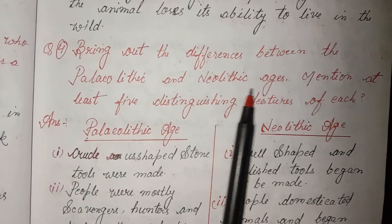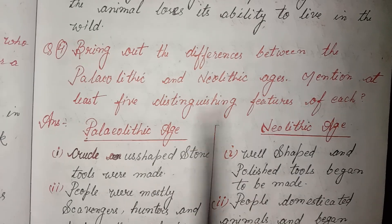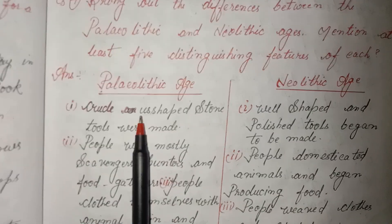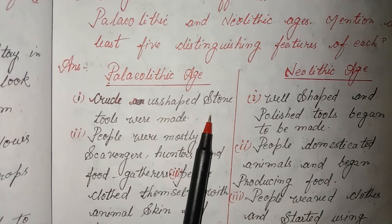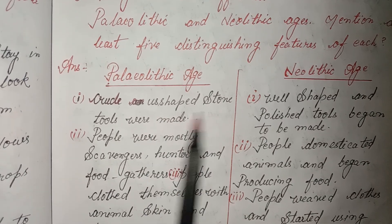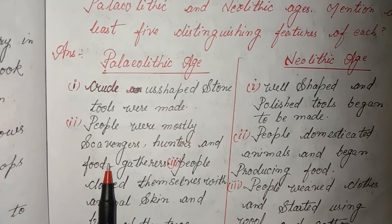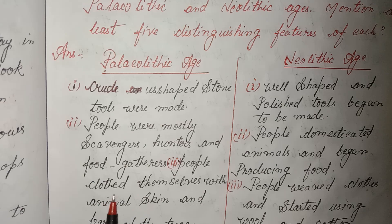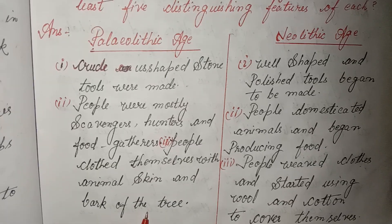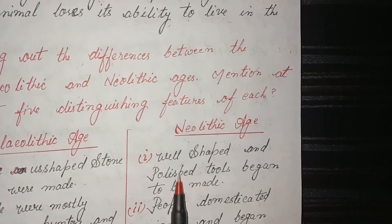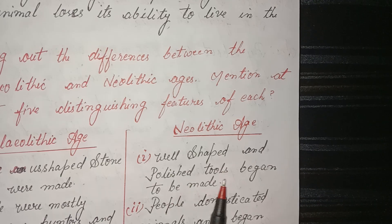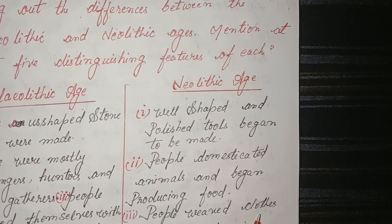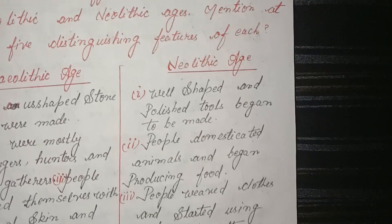Fourth: Bring out the difference between the Paleolithic and Neolithic ages — mention at least five distinct features of each. Paleolithic Age: first, crude and unshapely stone tools were made; second, people were mostly scavengers, hunters, and food gatherers; third, people clothed themselves with animal skin and bark of trees. Neolithic Age: first, well-shaped and polished tools began to be made; second, people domesticated animals and began producing food; third, people weaved clothes and started using wool and cotton to cover themselves.